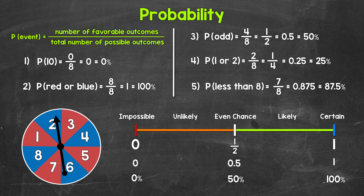Remember, probability tells us how likely something is to happen. The probability line gives us a visual of the likelihood an event happens. We will go through five probability examples, place them on the probability line, and talk about the likelihood of each event.